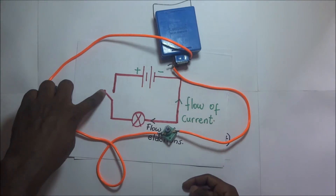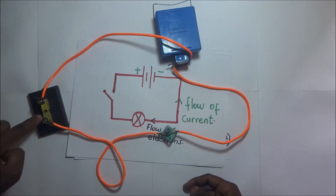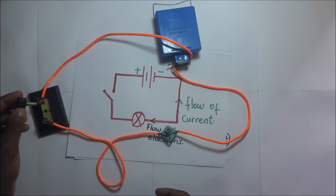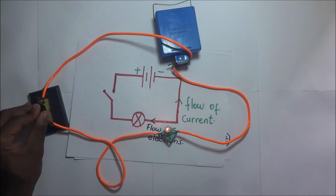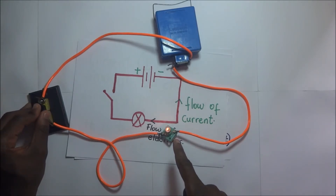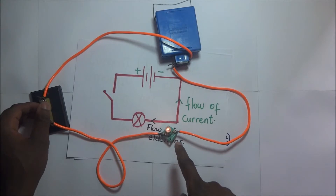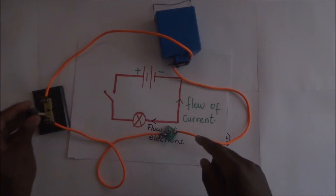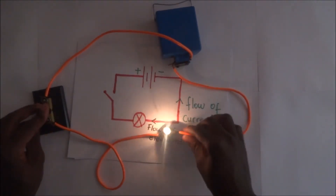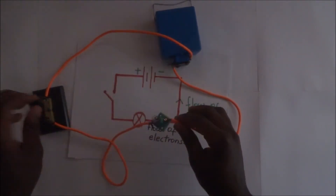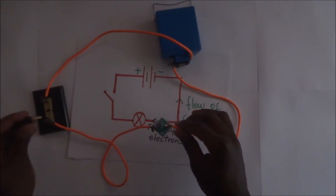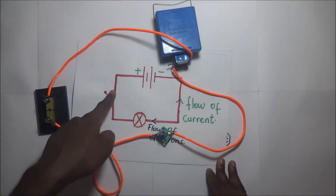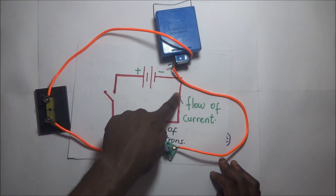Completing the circuit means closing the switch. Looking at our switch, we have a gap there, so to close it we bring the lever down and close it — and our bulb is able to light. When I close the circuit and complete it, the bulb lights up. When I open the switch the circuit is incomplete; when I close it, the bulb will light. Electrons always flow in a closed loop, from the negative to the positive.